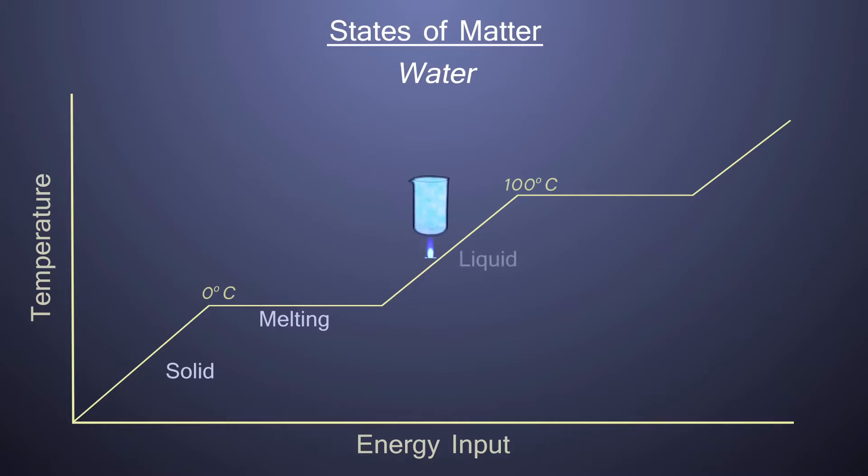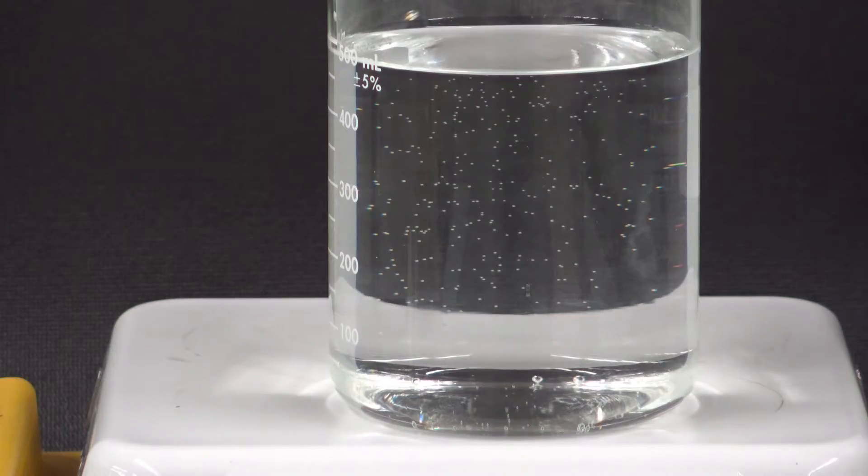And if you begin to heat the water, those dissolved molecules of oxygen, nitrogen, and carbon dioxide begin to escape. So that's the first thing, and it usually is at the side of the beaker.